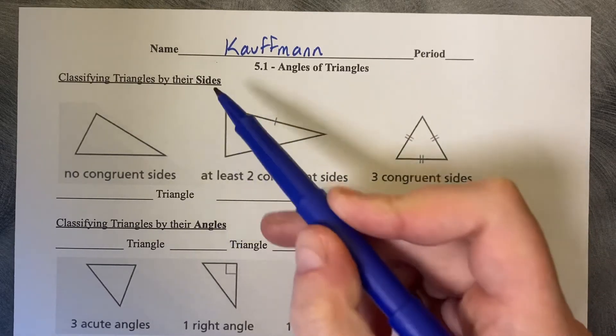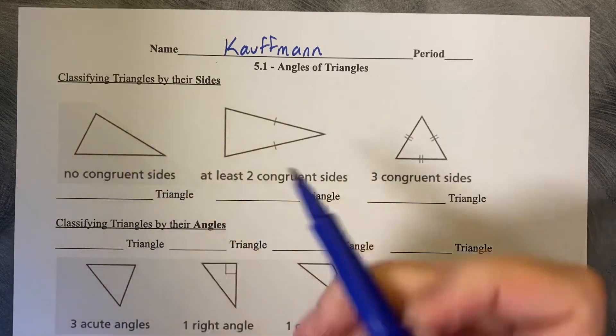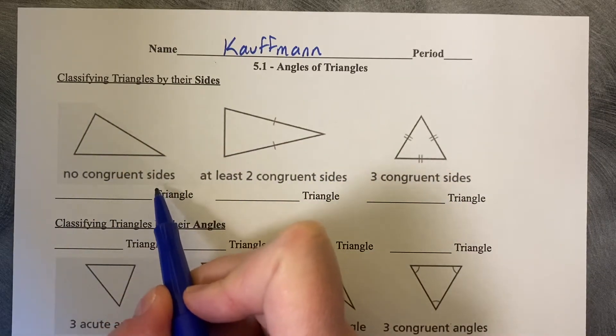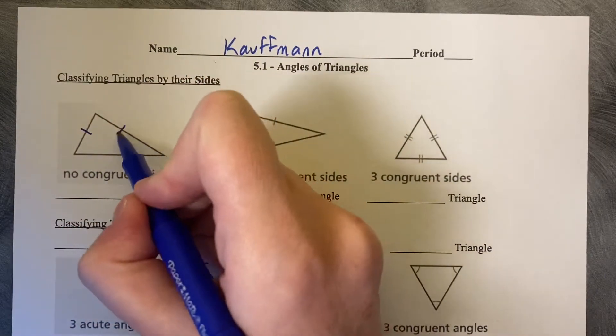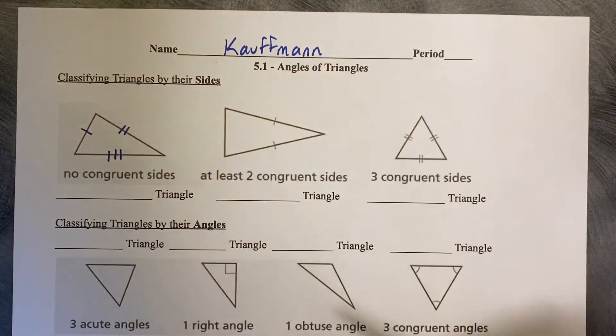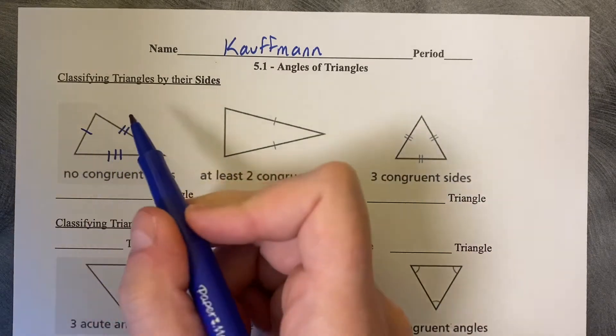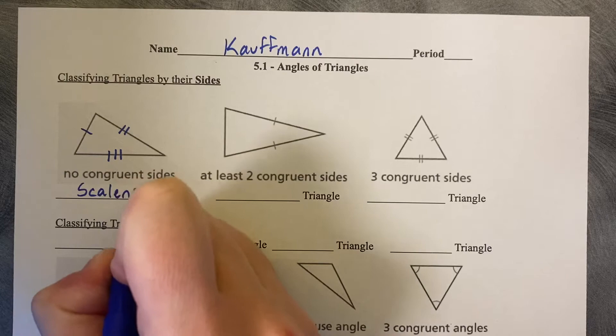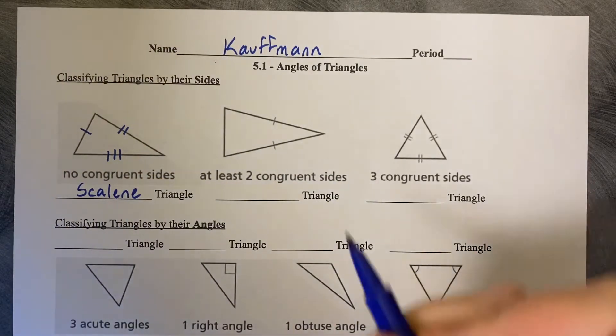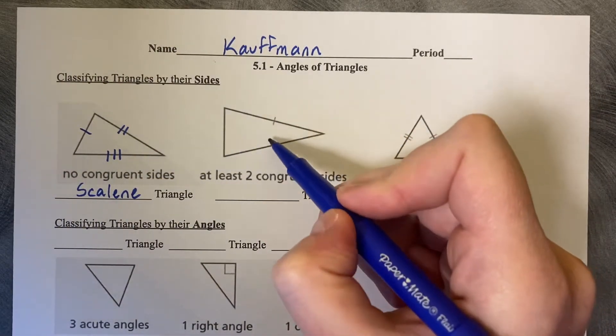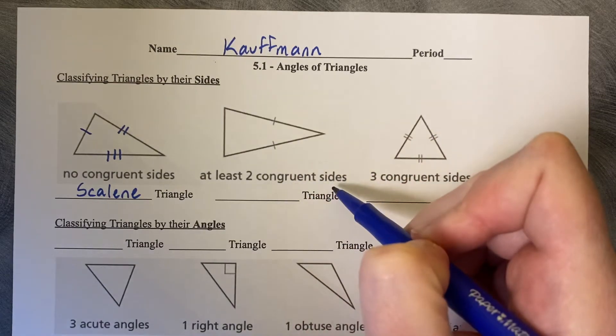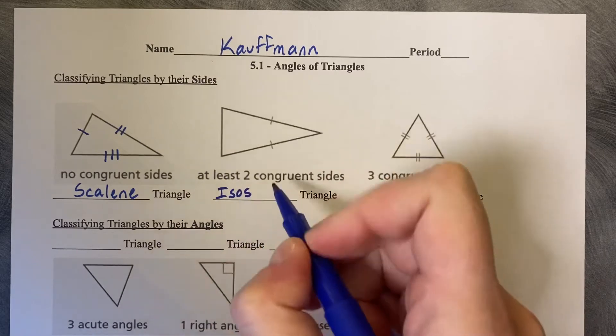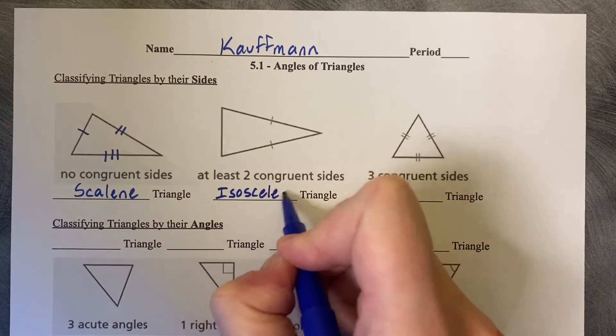If we start by the type of sides, if we have a figure like this where there's no congruent sides, you label that by using different tick marks on all three sides. We've denoted that this has no congruent sides and this is scalene. If you're looking at one like this where it's got two congruent sides, this is isosceles, I-S-O-S-C-E-L-E-S.